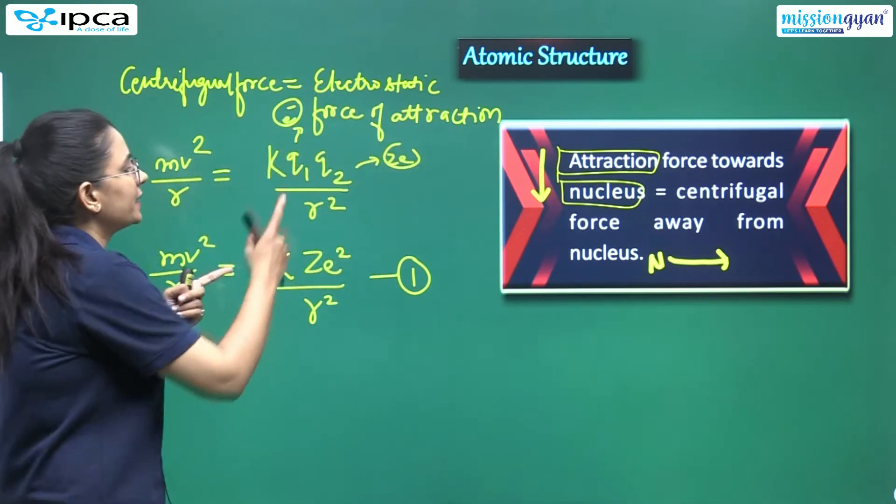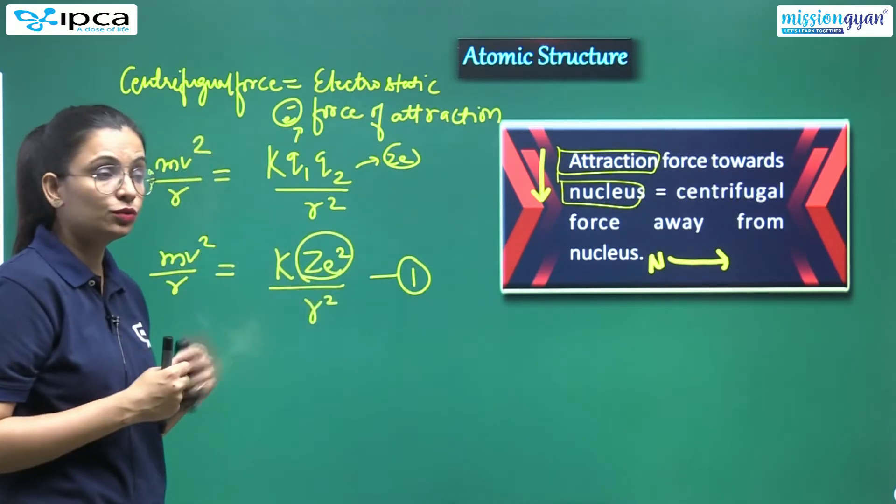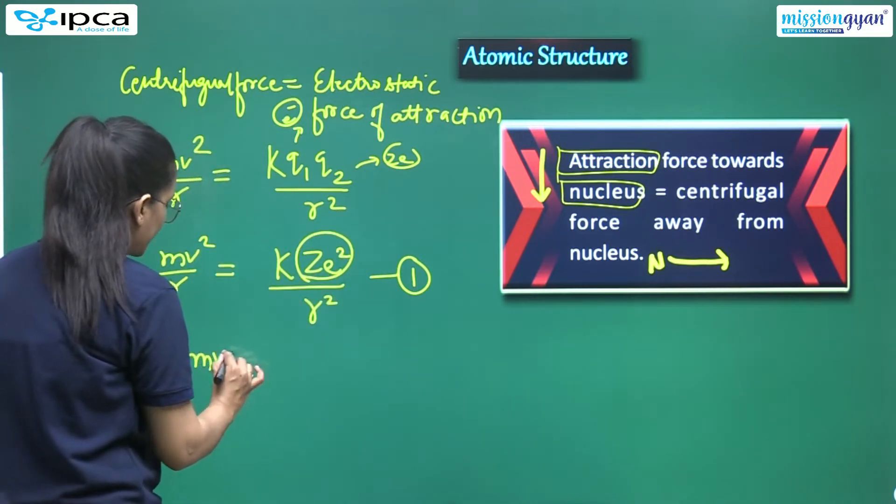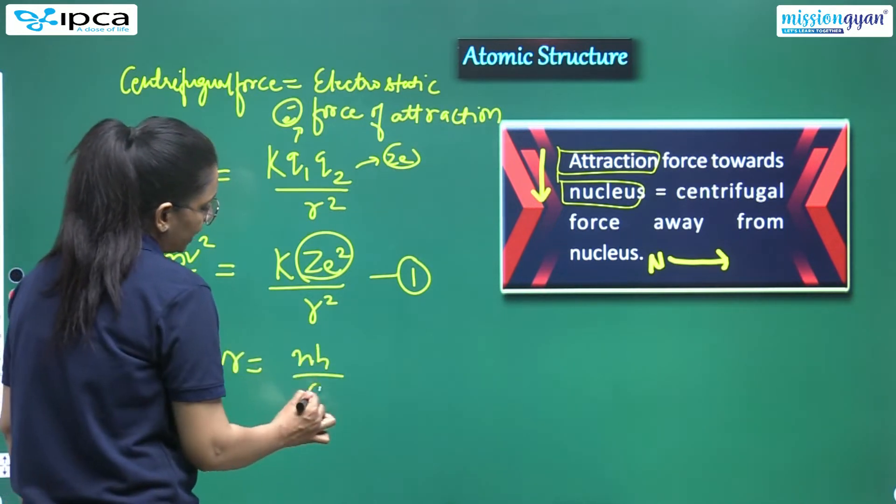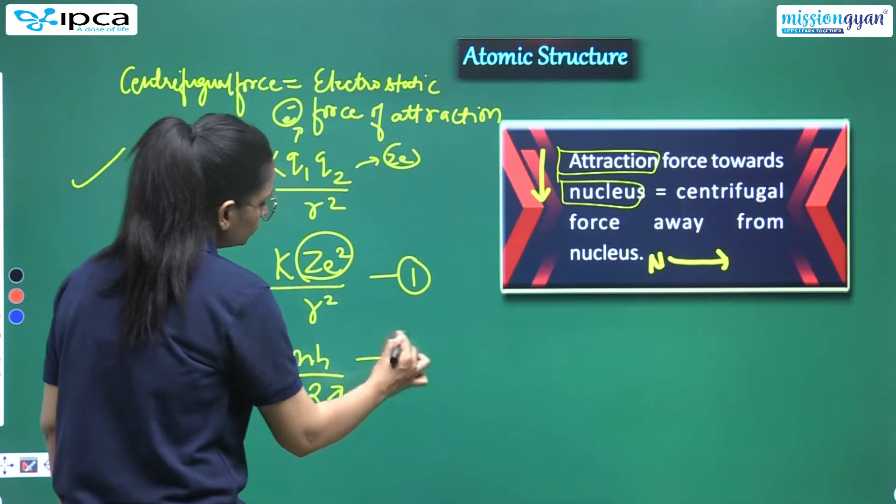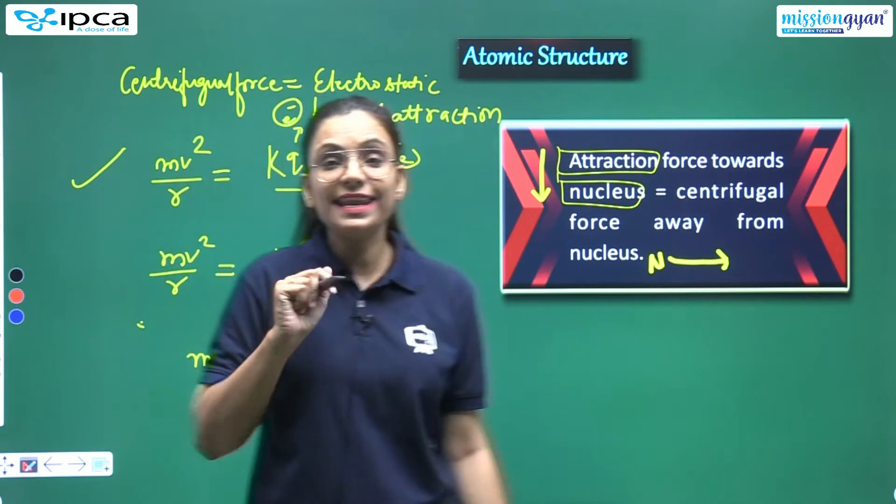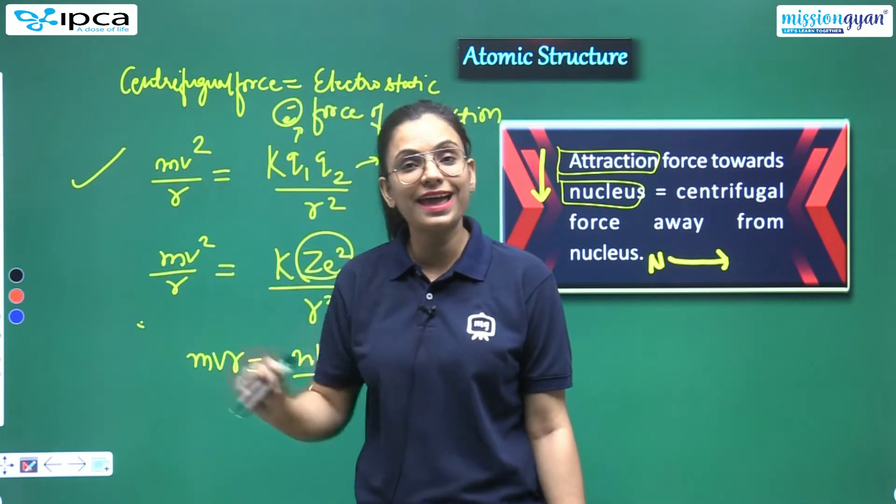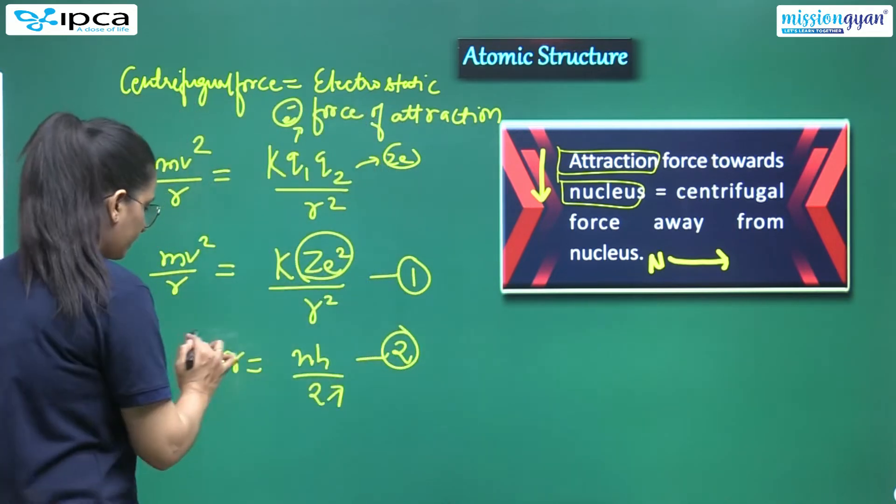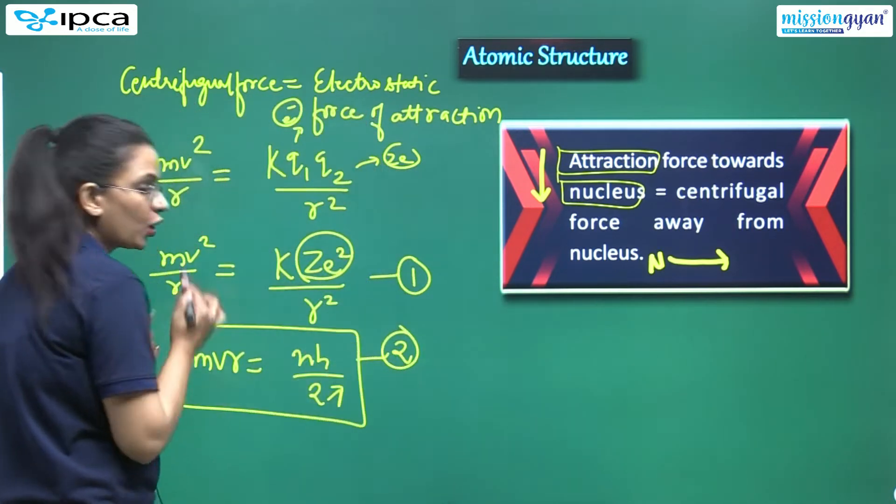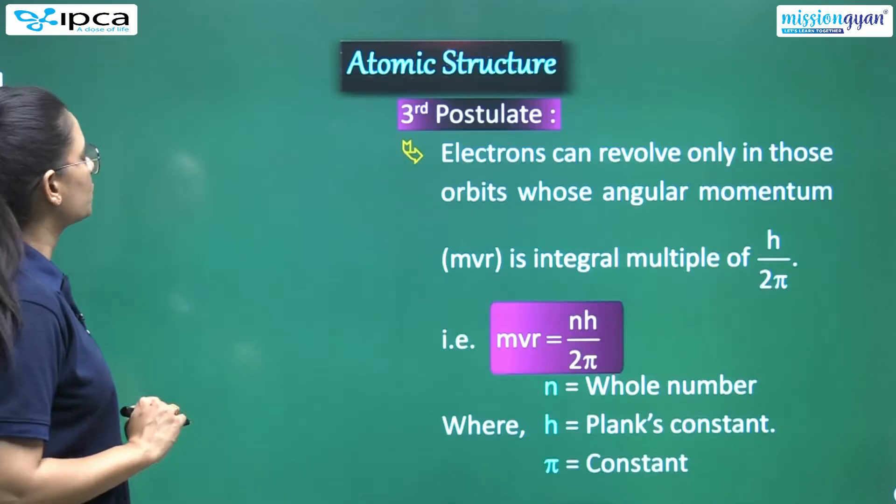mv square by r is equals to K Ze square by r square. How did this come? I am telling you that when this rotation is in circular motion, then it carries a charge there. We will also discuss this in the postulate. First understand this part. So according to the first and second postulate, we have put this thing equals to this. Then I have told that this charge here, I can write it as K Ze square by r square.